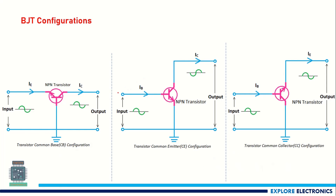There are three configurations we can use for BJT as an amplifier. In the first case, the common base configuration, the base terminal acts as the common terminal between input and output. The input is applied from the emitter terminal and the amplified output is taken from the collector terminal.